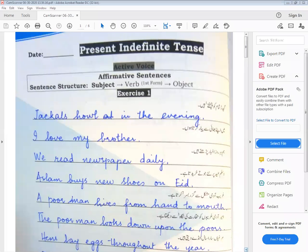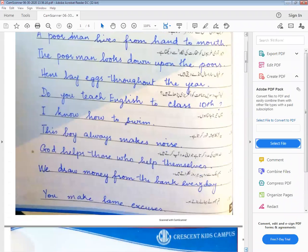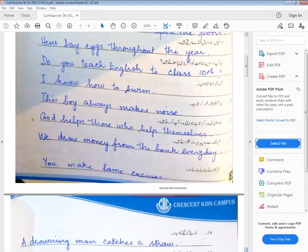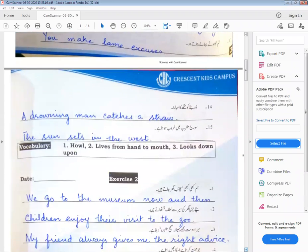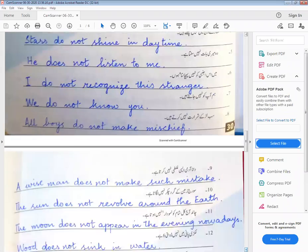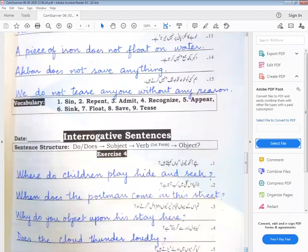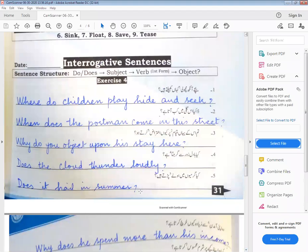Bismillahirrahmanirrahim, Assalamu Alaikum students. As you know, we were doing present indefinite tense exercise number four, which is on page number 31 in your book. Turn to page 31. We have already started this exercise. I will continue it now. I have already made you complete the first three sentences.